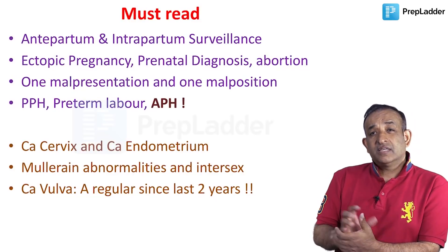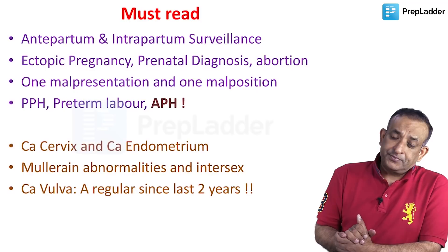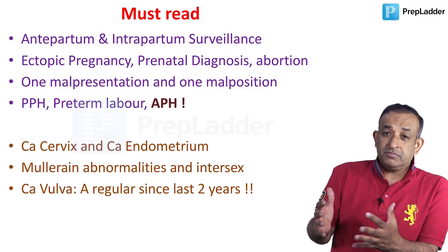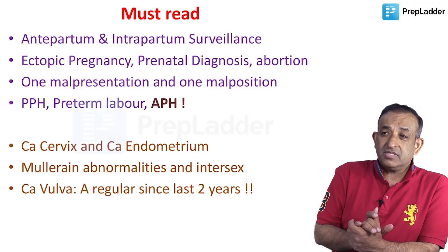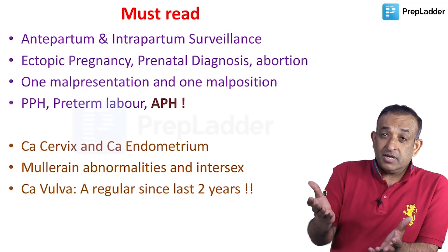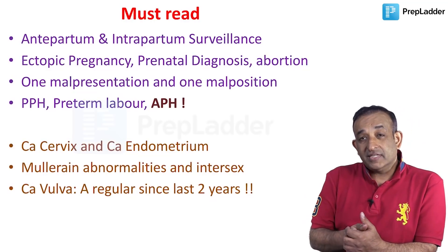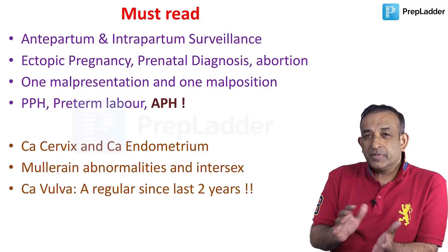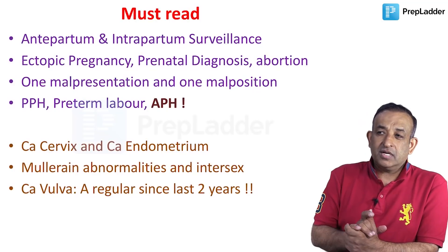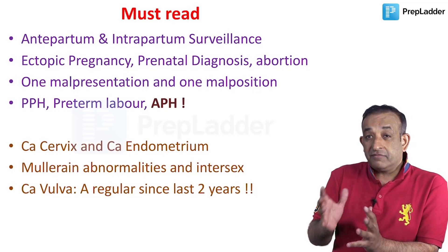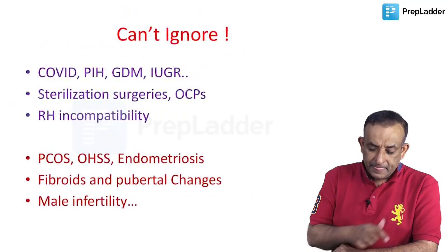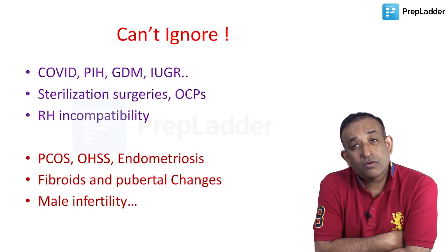Also read one question on Mullerian anomalies, something about intersex, and Ca vulva. Ca vulva is something we sometimes never taught in live classes — a confession — because it never came in exams before. But now FMG candidates are getting it and PG entrance candidates got it this year too, so for the last two years it has become a hot favorite. Do have a look at this topic — it is a little tough to remember, so do the tough things before the easier ones.